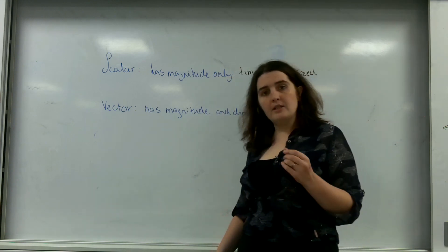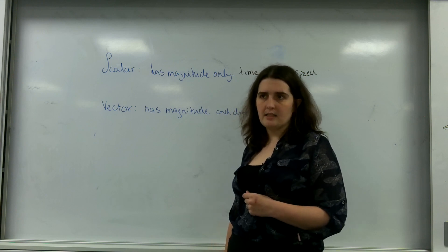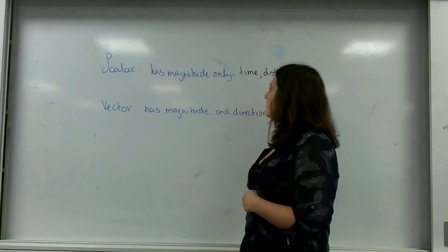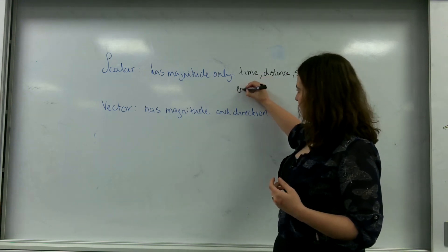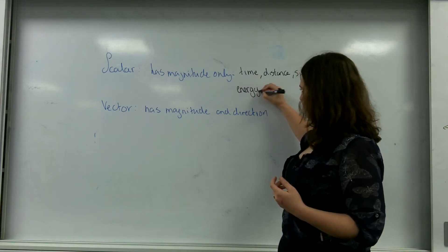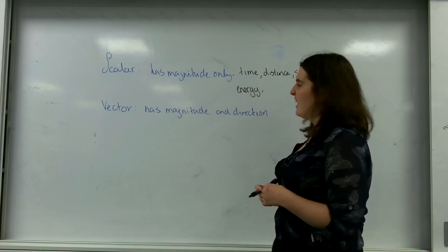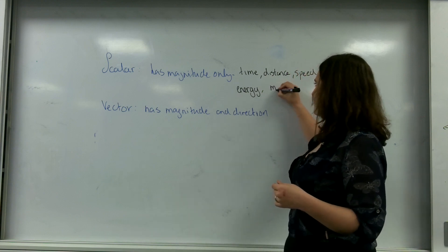Speed is also a scalar quantity, so that is like going at 40 miles per hour. And other ones include energy and other things like mass.